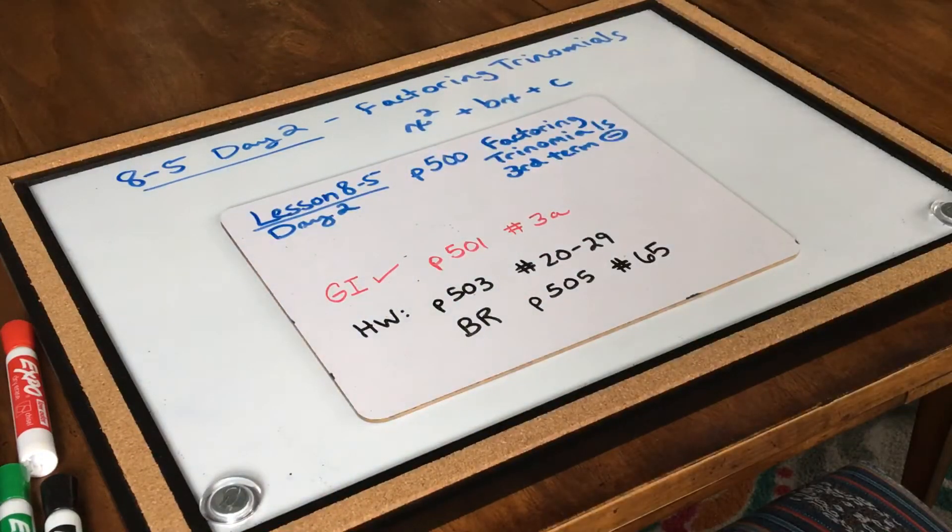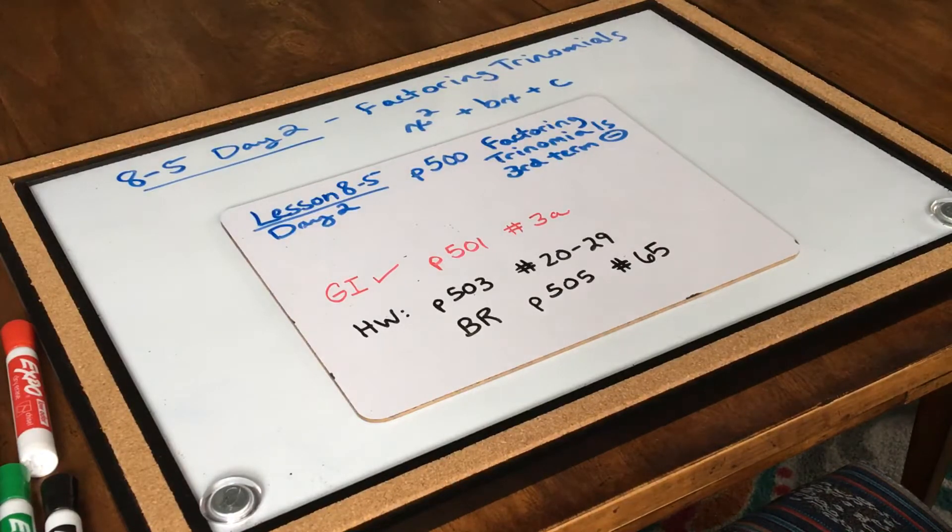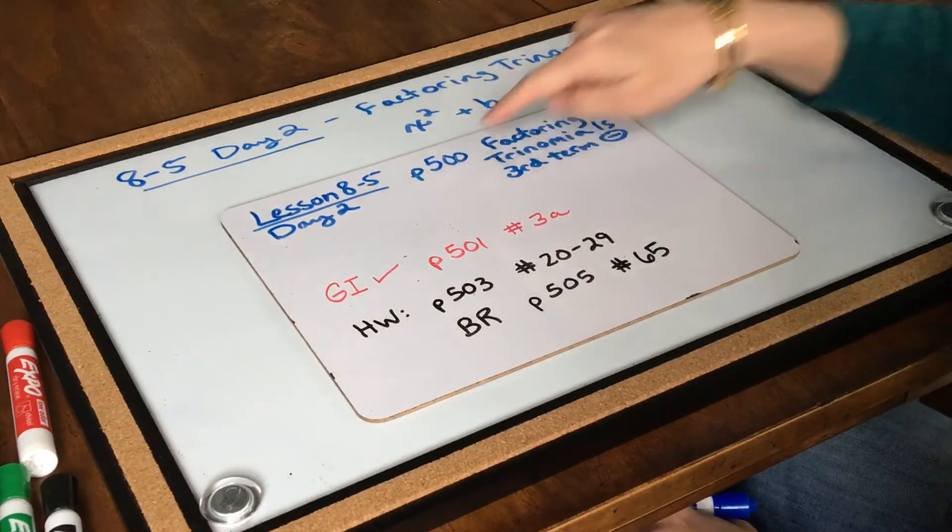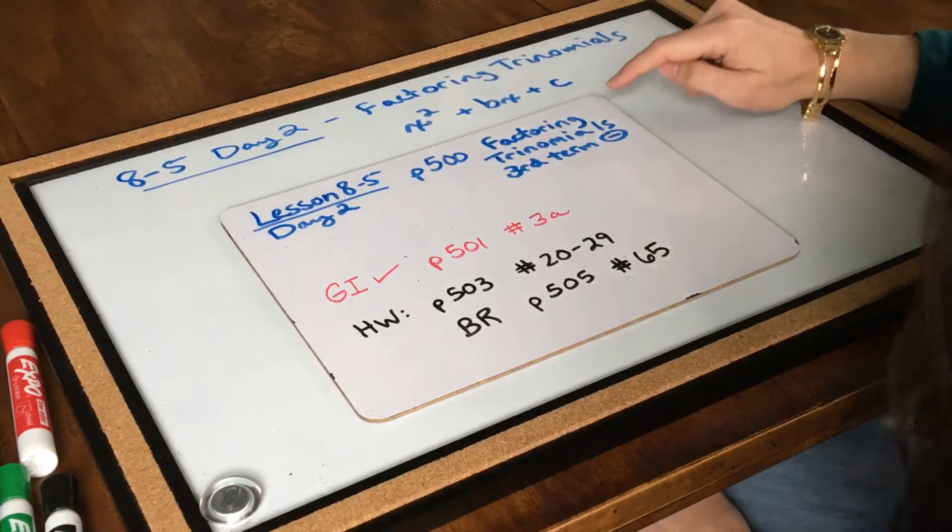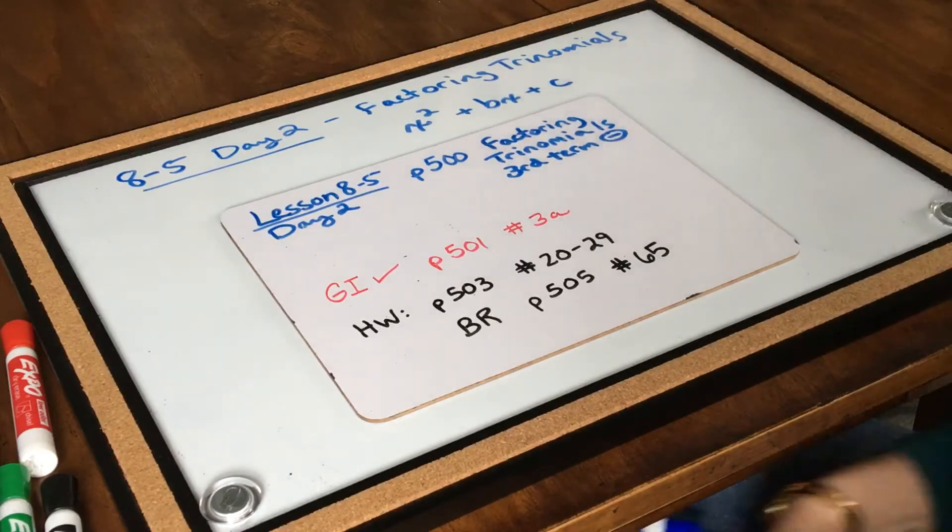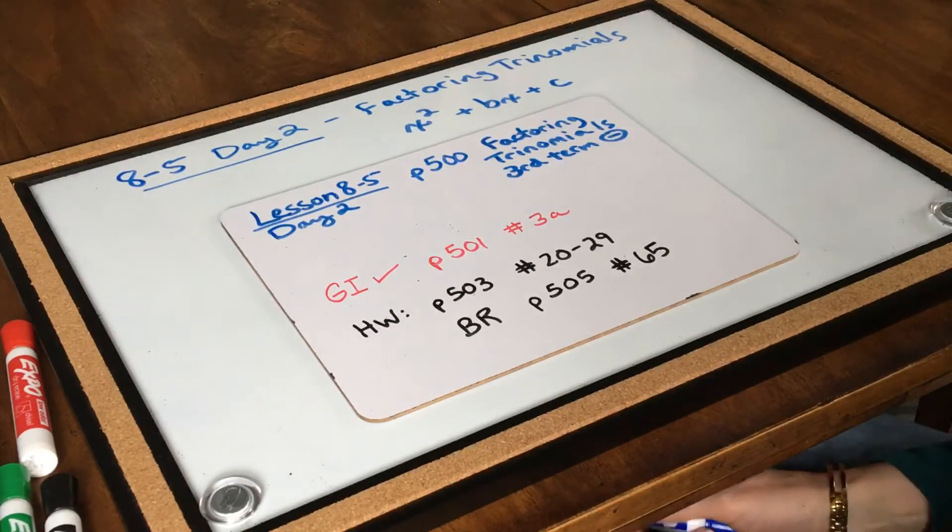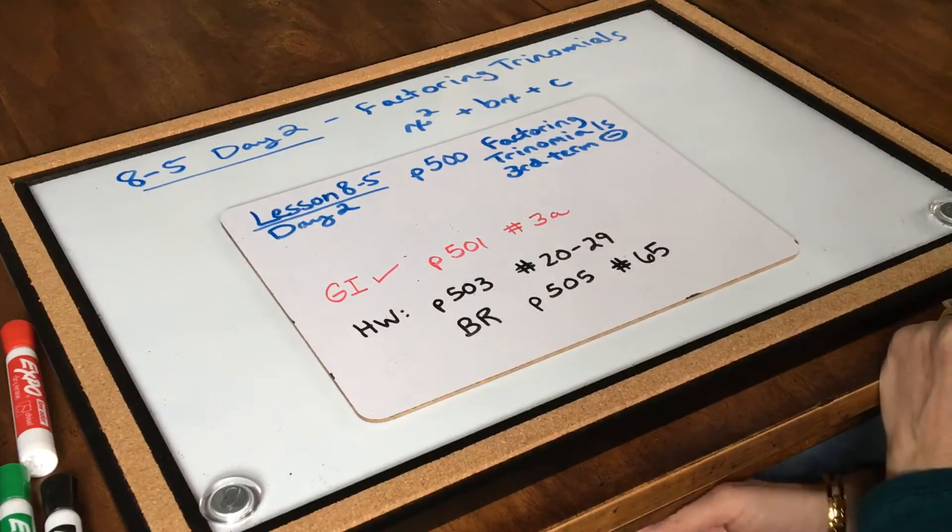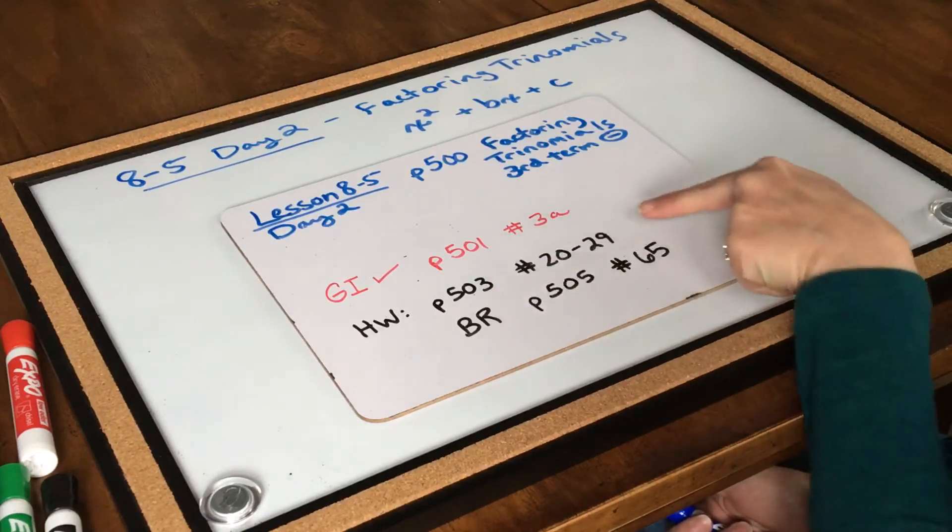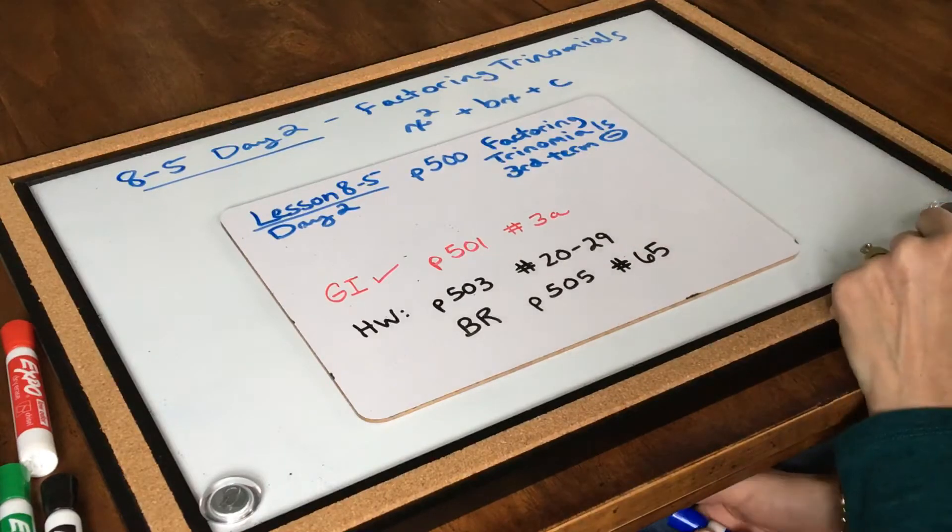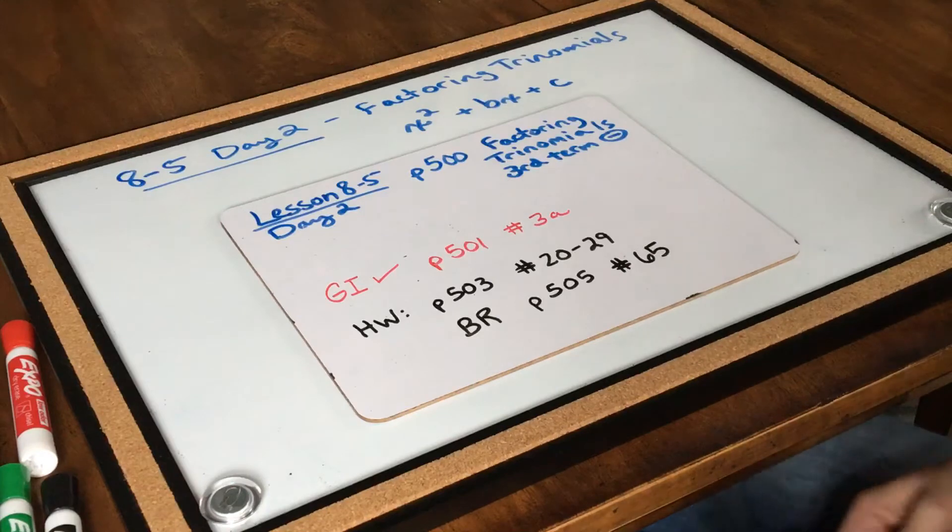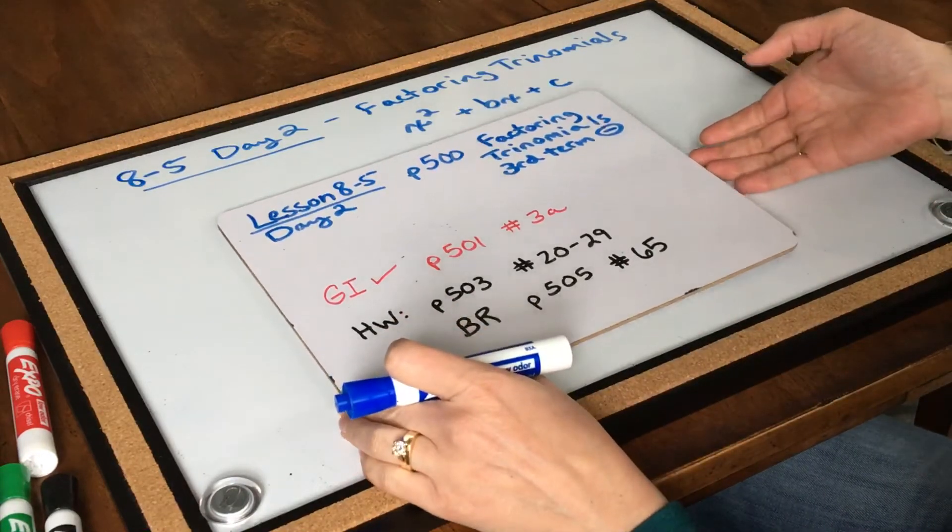Hi, 8th grade. Today we're going to be doing our second round of factoring trinomials. We're going to be working on lesson 8-5, day 2, and this is on page 500. Your gotta check is going to be page 501, number 3A. Your homework for tonight is page 503, numbers 20 to 29, and your bell ringer today is on page 505, number 65. Three sentences, please. Alright, let's get to work.